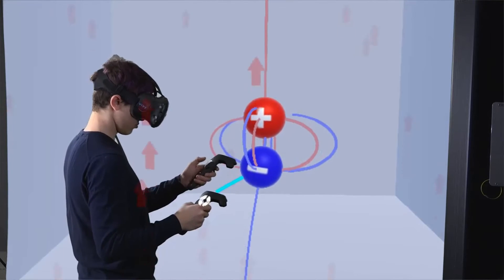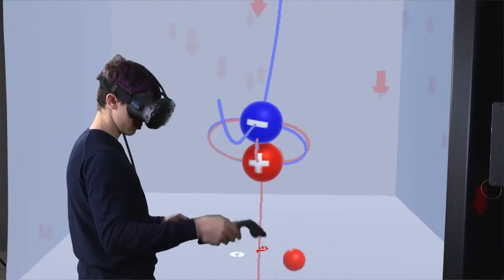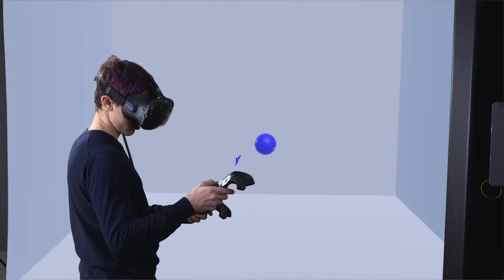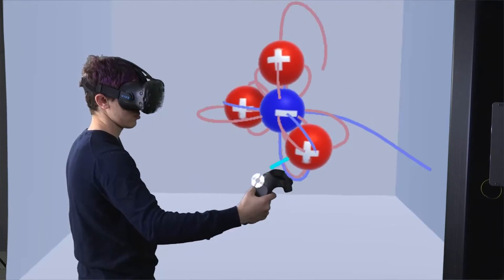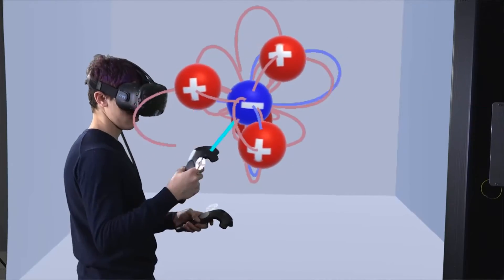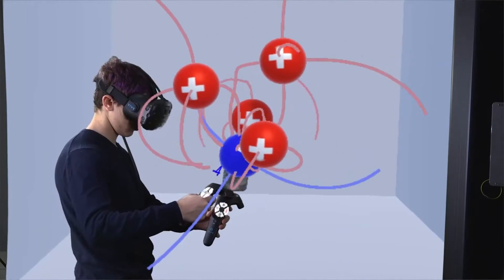And then I created a minus four charge and made four smaller charges with a value of one around it. And they just naturally formed into a tetrahedron.